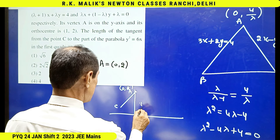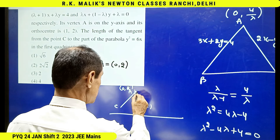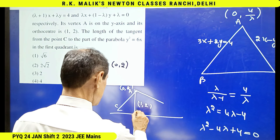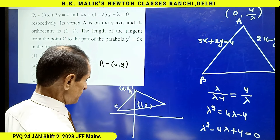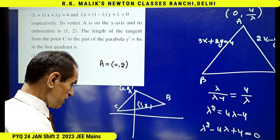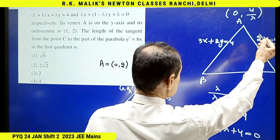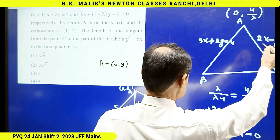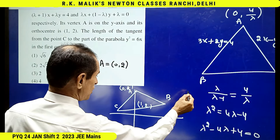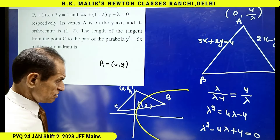Point A has coordinates (0, 2), and (1, 2) is the orthocenter. The slope of AC is positive and the slope of AB is negative. The graph of the parabola is also shown.